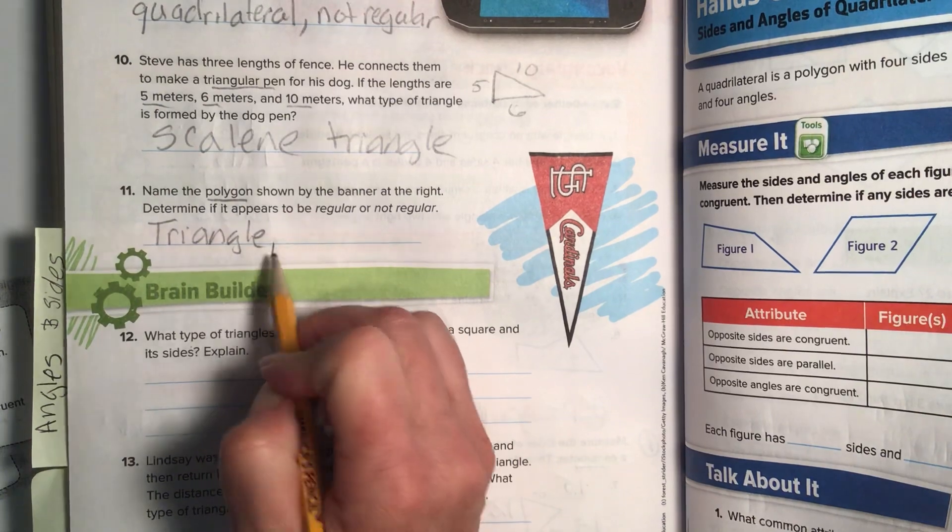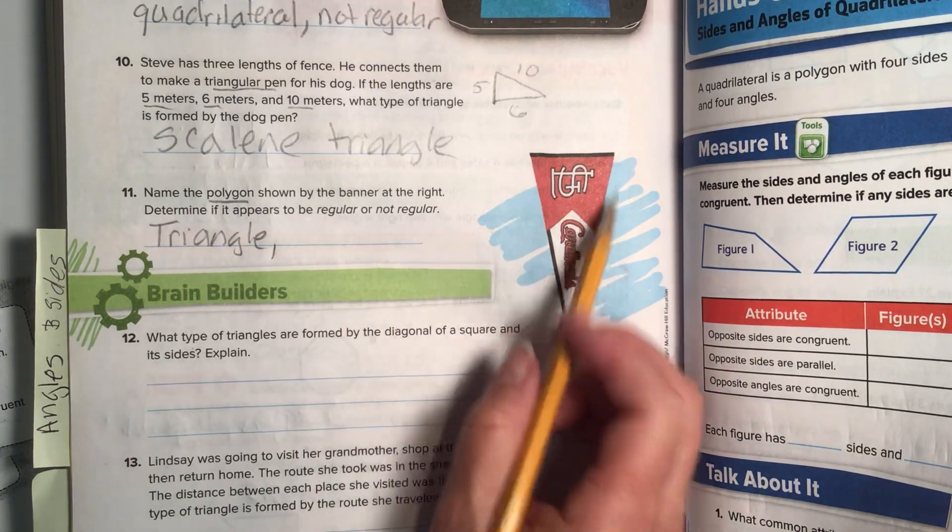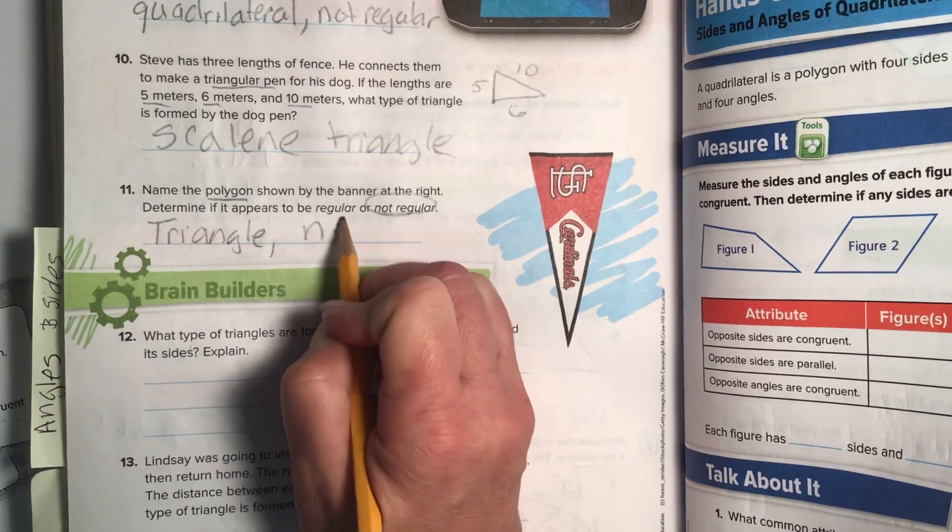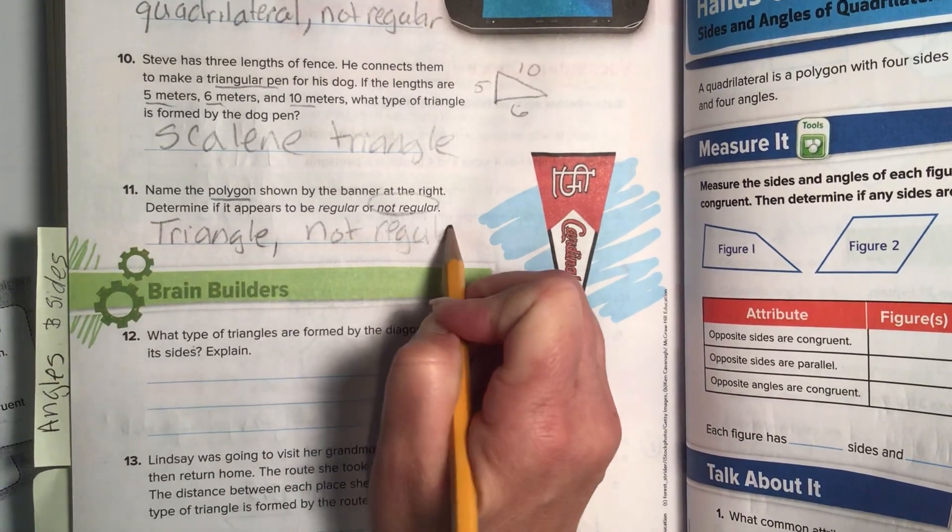Then, is it regular or not regular? Well, regular would mean that all the sides are the same. And it's not. So, we're going to say not regular.